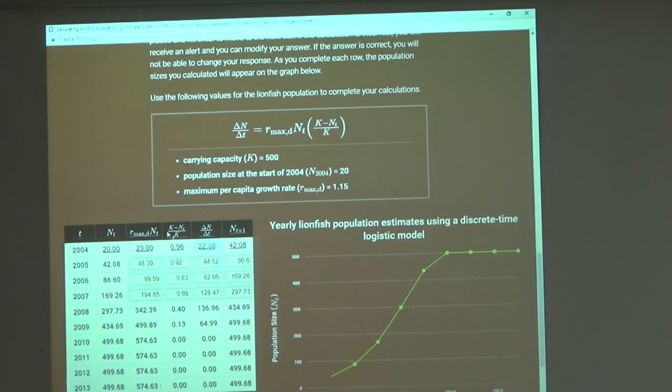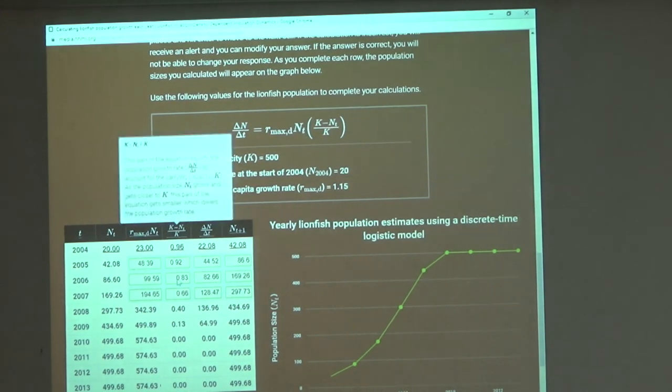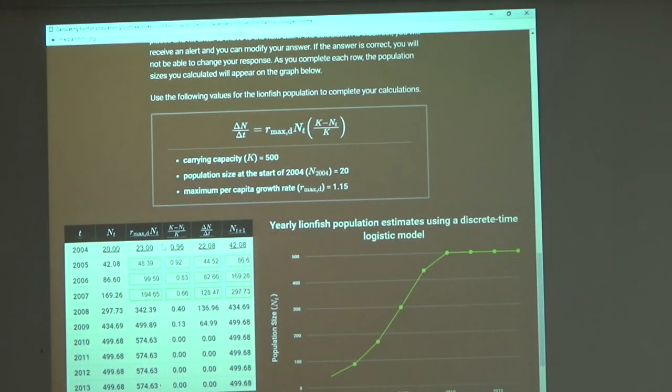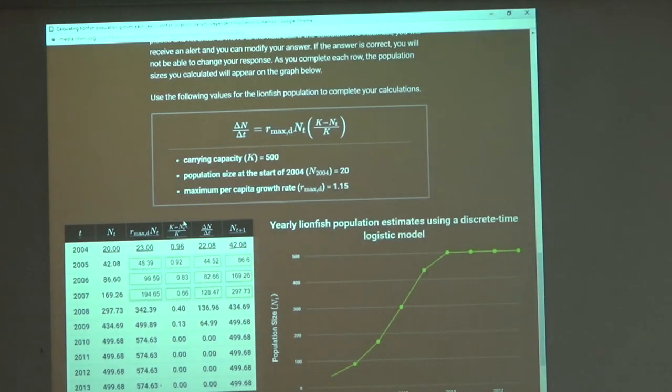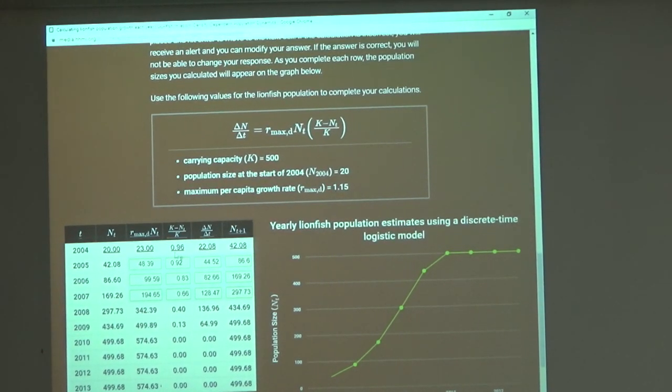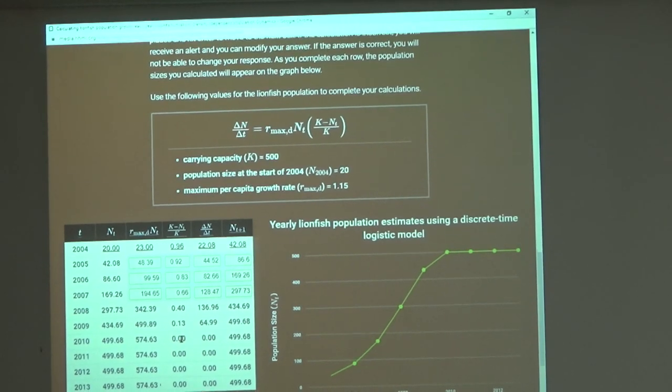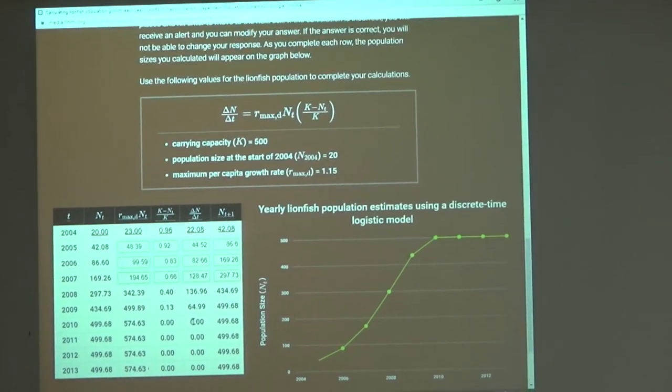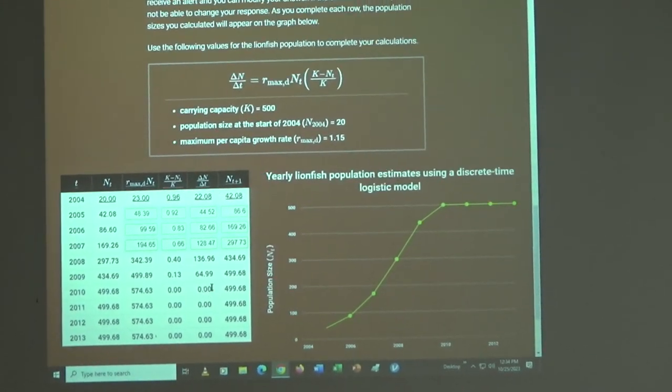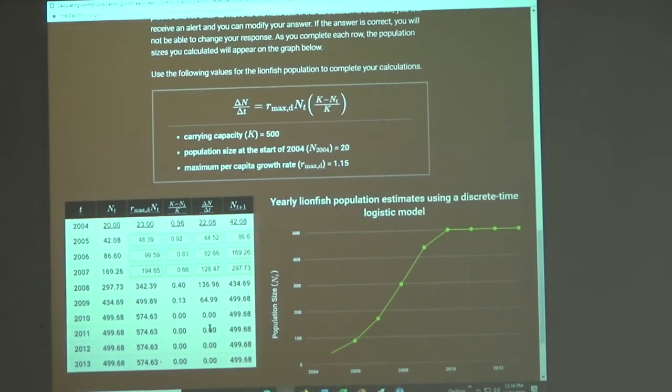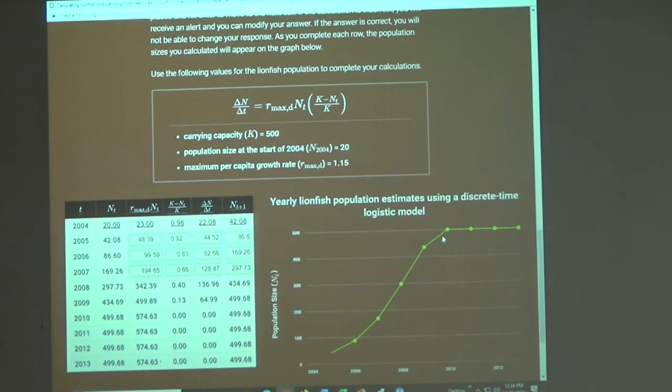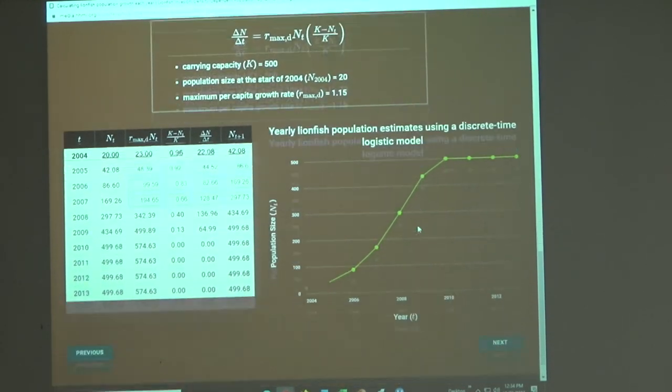And the nice thing about the way this graph is organized is that you can see that carrying capacity calculation go from very close to one to zero. And anything times zero is zero. So then our growth rate is going to be zero. And you can see that we've met that carrying capacity right there.